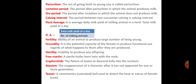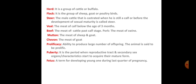Herd is a group of cattle or buffalo — it is called a herd. Flock is a group of sheep, goat, and poultry — it is called a flock. Steer is a male cattle that was castrated while still a calf, before developing sexual maturity — it is called steer.